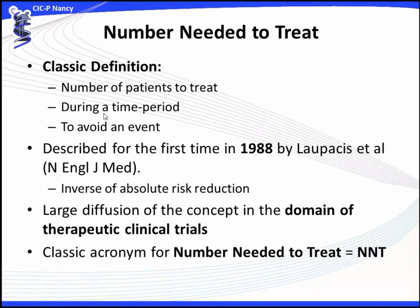The number needed to treat is the number of patients we need to submit to a given treatment during a time period in order to avoid an adverse event. It was described for the first time by Laupacis in the New England Journal of Medicine as the inverse of the absolute risk reduction. It gained large diffusion because it allows an easy interpretation of the absolute net benefit. The classic acronym for the number needed to treat is NNT.